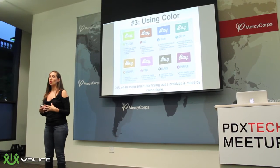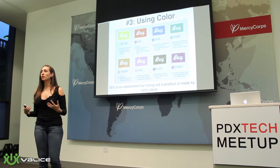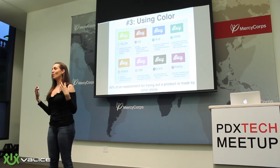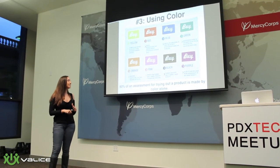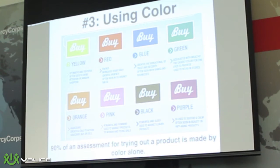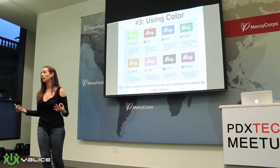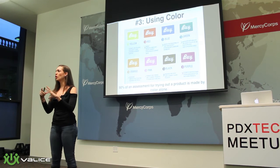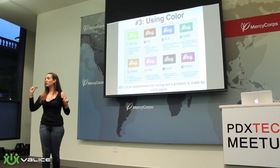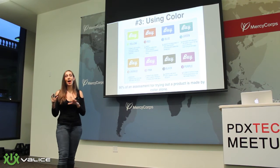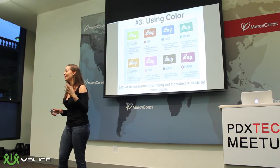The third thing is using color. There's a very deep science on color psychology. If you're doing front-end design, thinking about what you want your buttons or background to be, the psychology of color is incredibly important. A recent study found that 90% of an assessment for trying out a product is made by color alone. We rarely think about color in terms of human behavior — we just think about what looks pretty. But each and every color, online specifically, has its own unique meaning. When you're designing your product, make sure you're doing it purposefully to get the human behavior reaction you want.